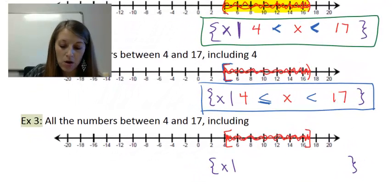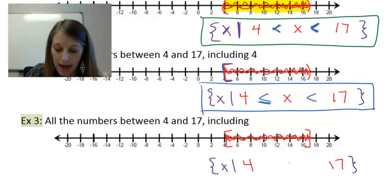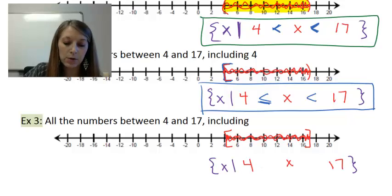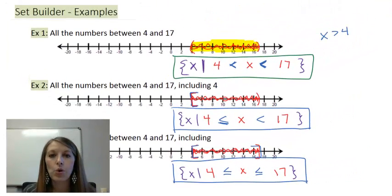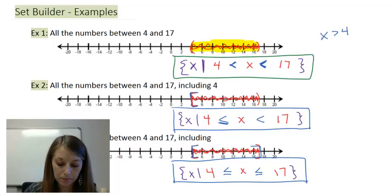Example 3, again, almost the exact same way. My numbers on my outside, my X is sandwiched in between. Here, I am including both of my endpoints. So, both of these need to be less than or equal to. So, that is my final set builder notation there. So, I have basically identified all three ways to notate a set of numbers. I'm going to stop this video here, but my next video is just going to work through a couple more examples of graphing, interval, and set builder notation.